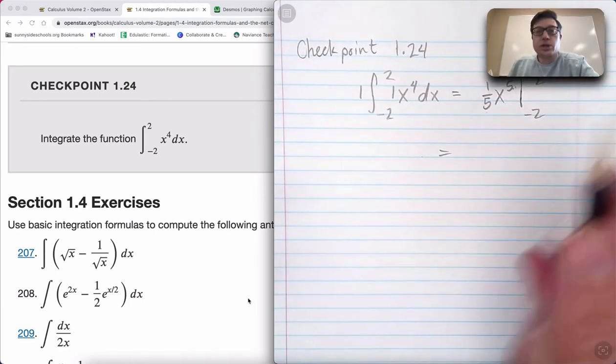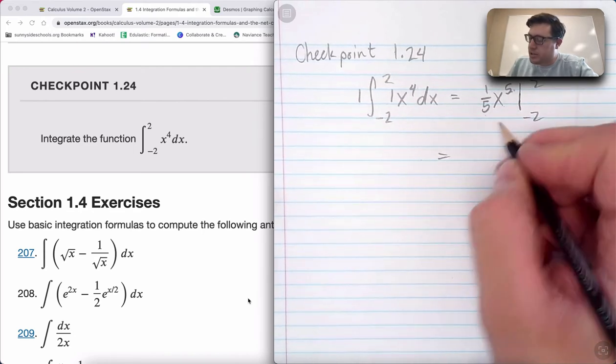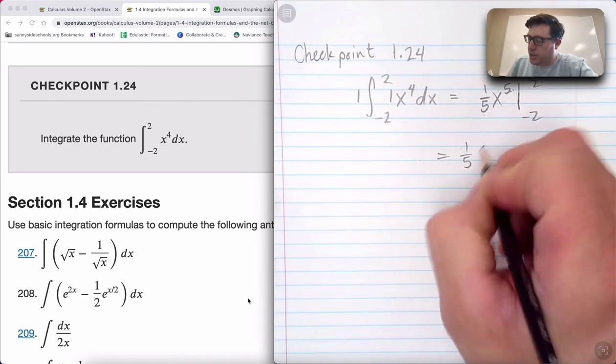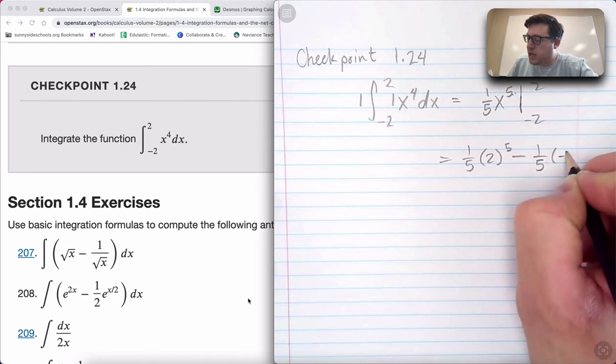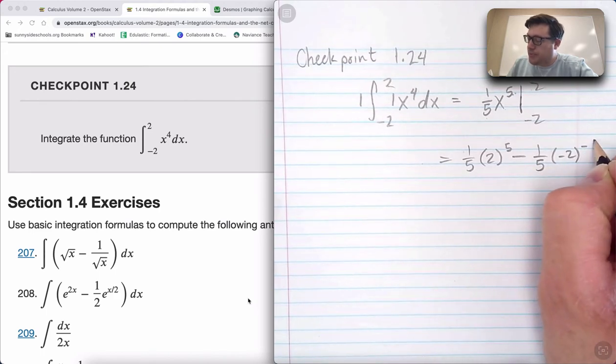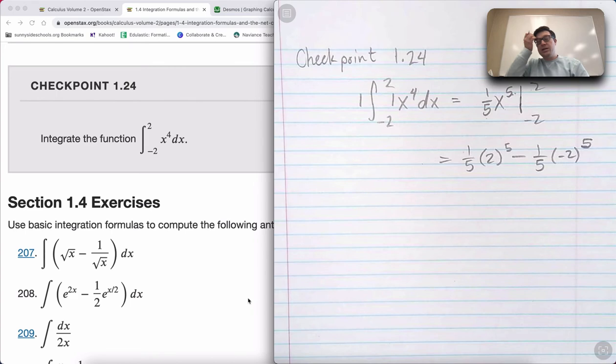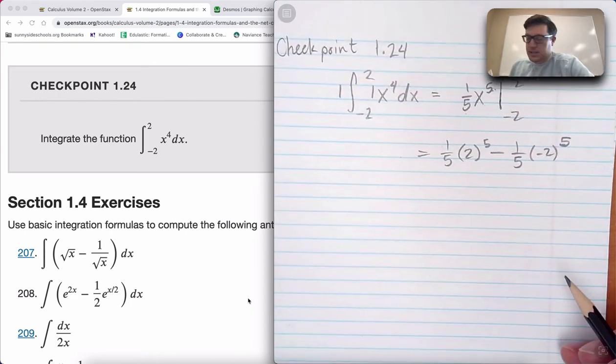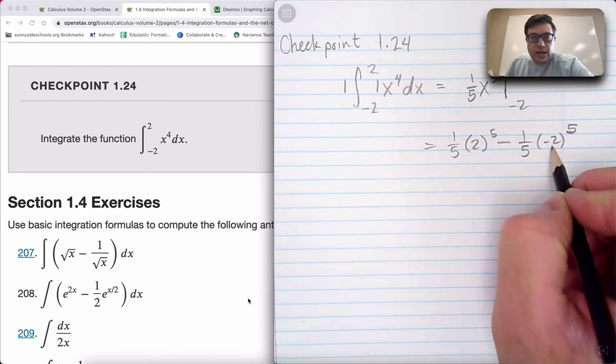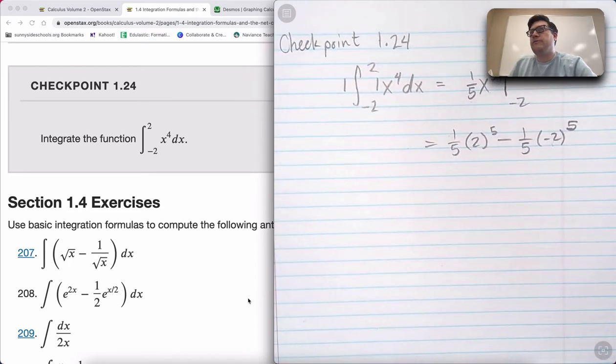Use fundamental theorem of calculus part two. So that would be two to the fifth minus one over five times negative two to the fifth. Because we have a negative number, and that negative number is to an odd exponent, this is going to result in a negative answer. I happen to know two to the fifth is 32.